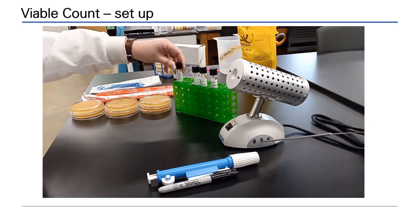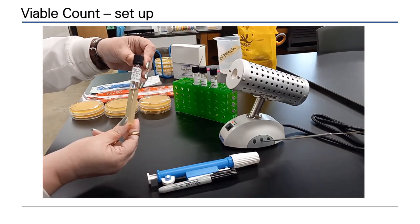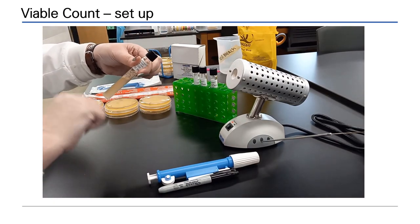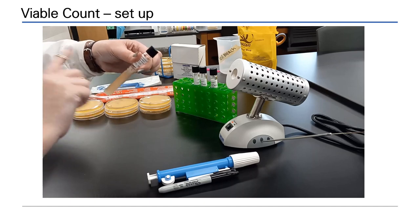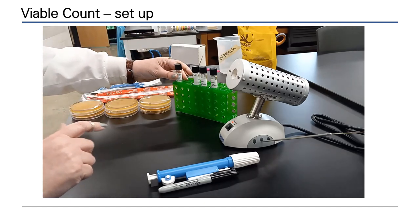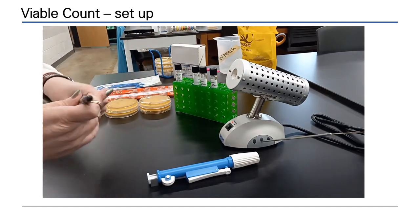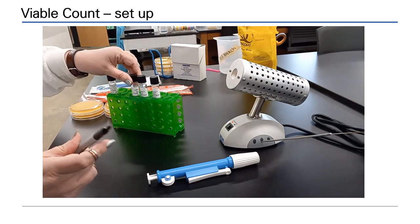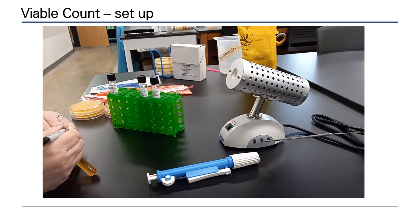The viable count technique is a means to determine how many live cells are in this culture. Cells must be re-suspended before diluting them. In this demonstration, a serial dilution, which is 10-fold, will be performed.